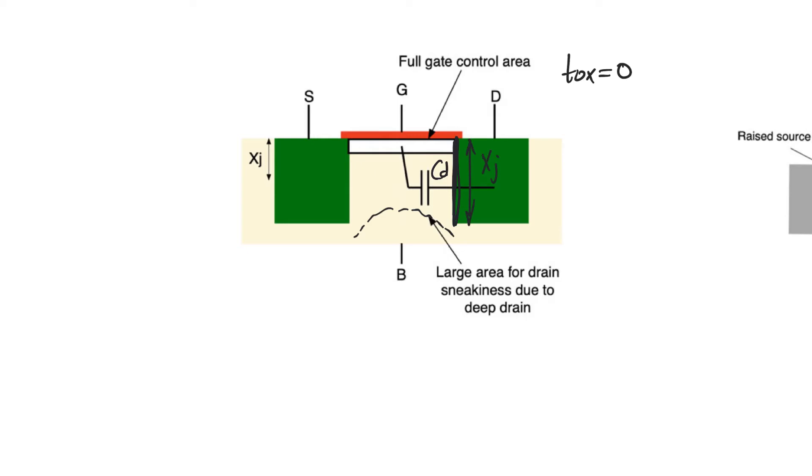So fighting drain induced barrier lowering by reducing the thickness of the oxide not only is counterproductive because of tunneling, it's counterproductive because it misses the whole point about drain induced barrier lowering which is that the drain is coupling to the channel through sneaky path due to its depth.